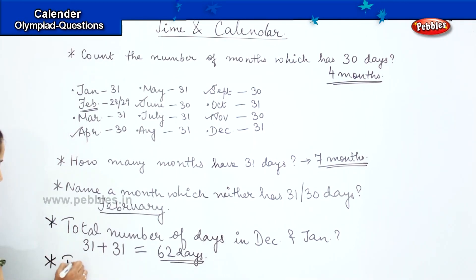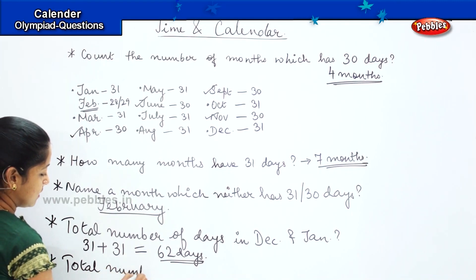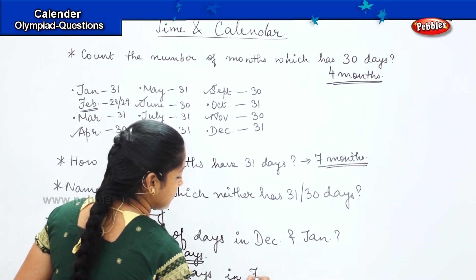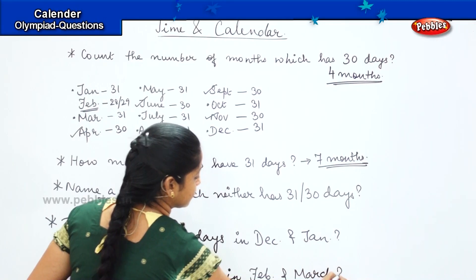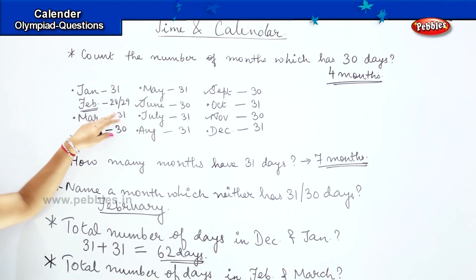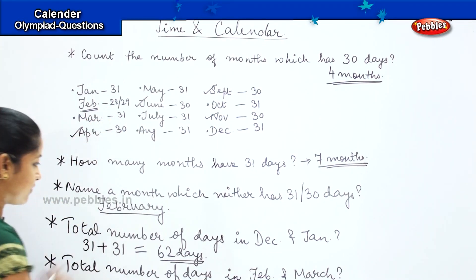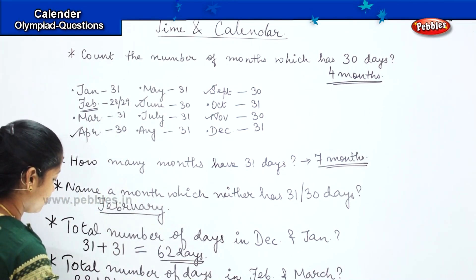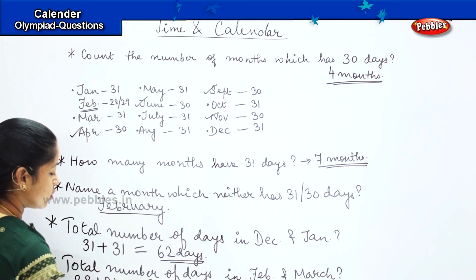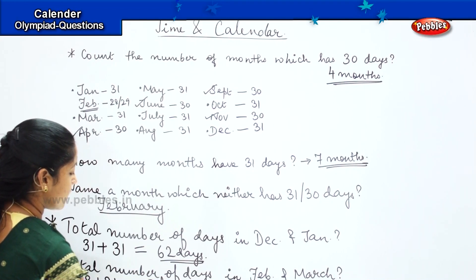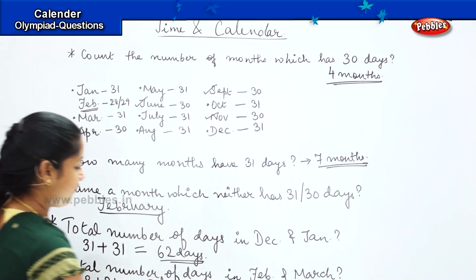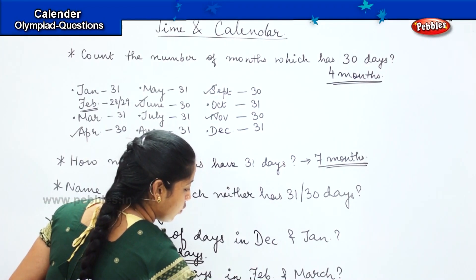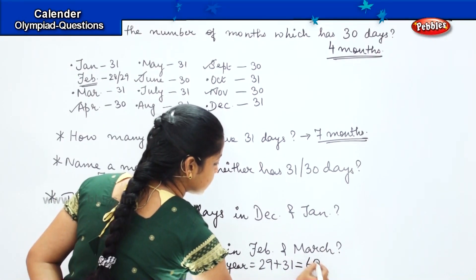Tell me the total number of days in February and March. I assume February to be a normal year, not a leap year. February has 28 days and March has 31 days. So the total is 28 plus 31, which is 59 days. And if it is a leap year, then it will be 29 plus 31, which is 60 days.